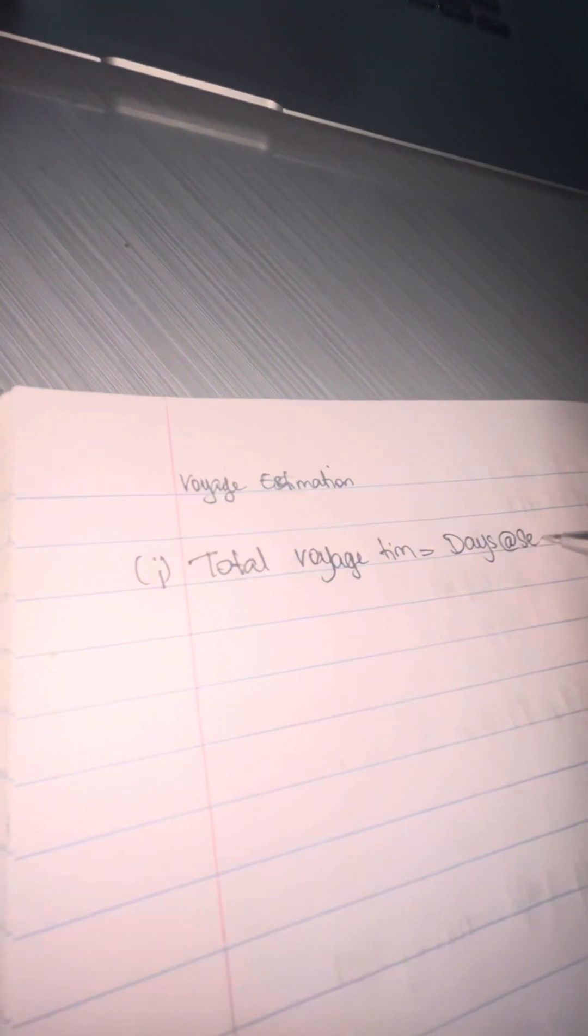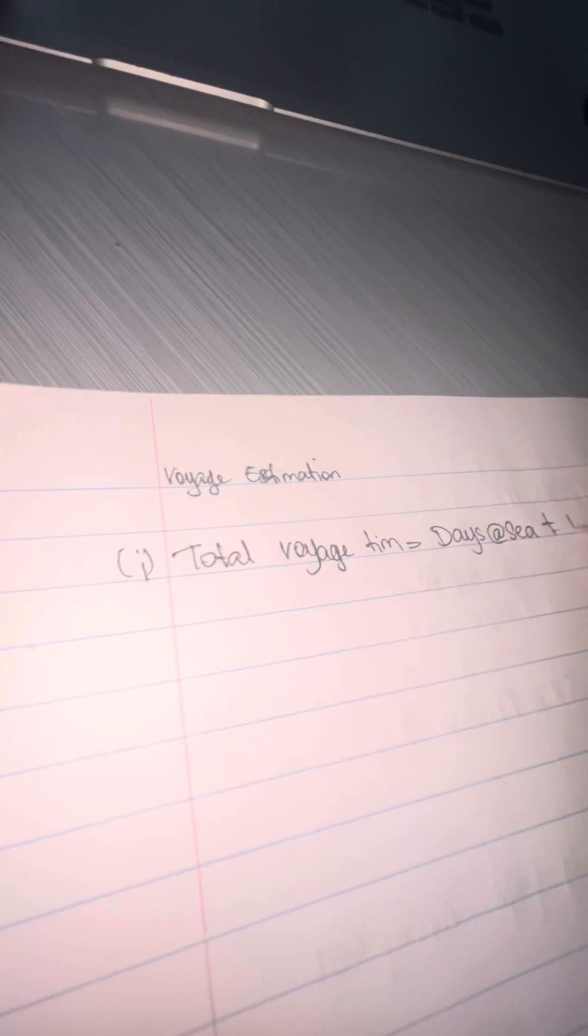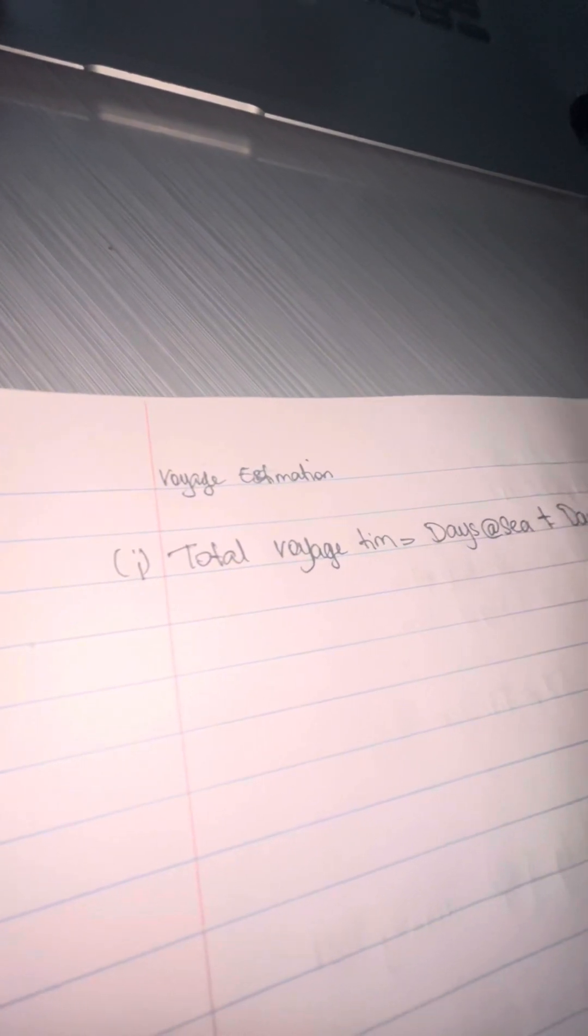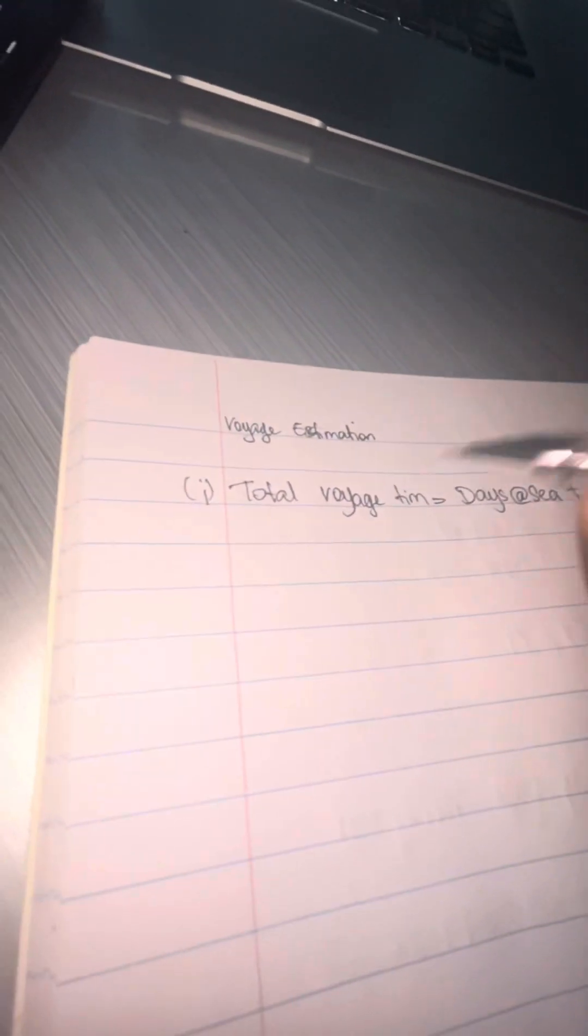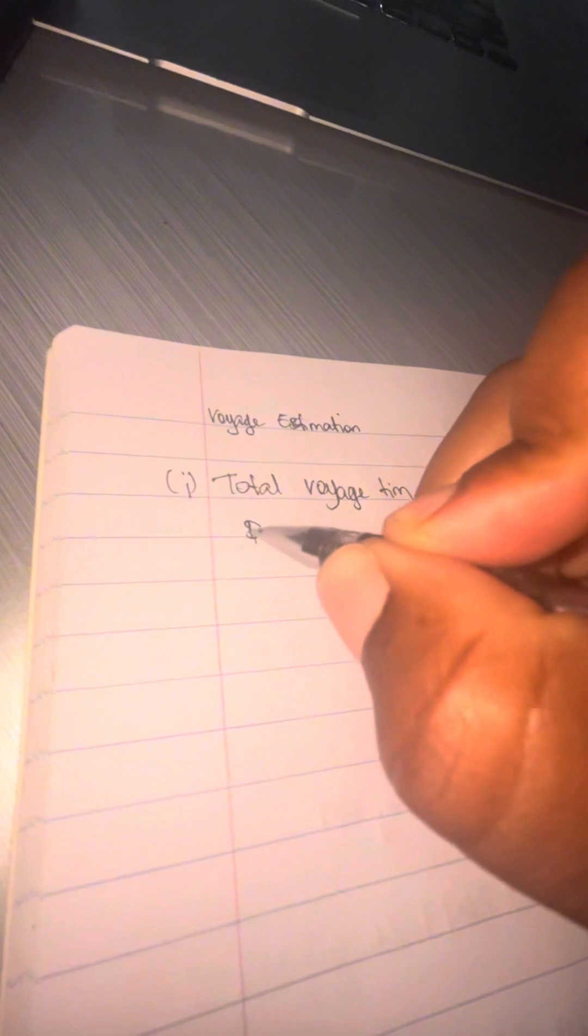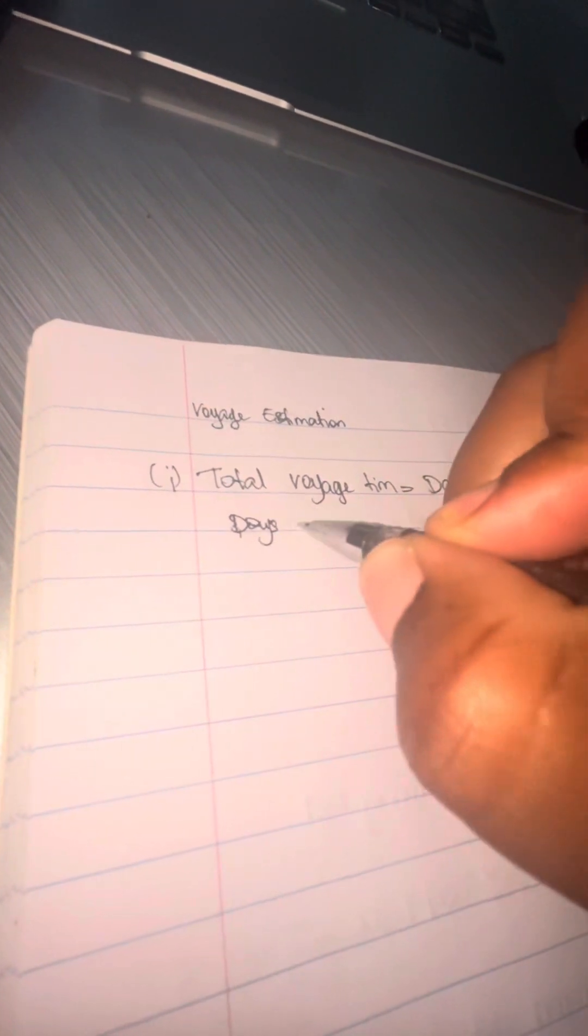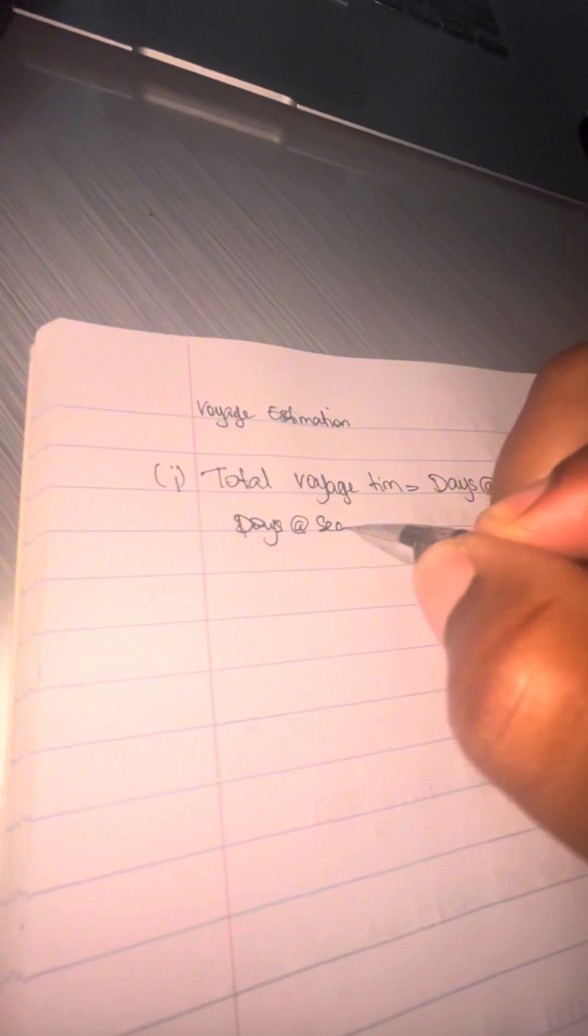Use your laptop or phone to do this calculation simultaneously. To calculate the total voyage time, we need to know the days at sea and the days at port. To get the days at sea, we're going to take the nautical miles given to us, which is 4545 nautical miles.